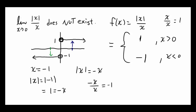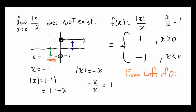Now let's think about what the limit as x approaches 0 of absolute value of x over x is. Let's look at it from the left. From the left of 0, as you're getting closer and closer to 0, it seems like f of 0 is going to be negative 1. So from the left of 0, it seems like the limit is negative 1.